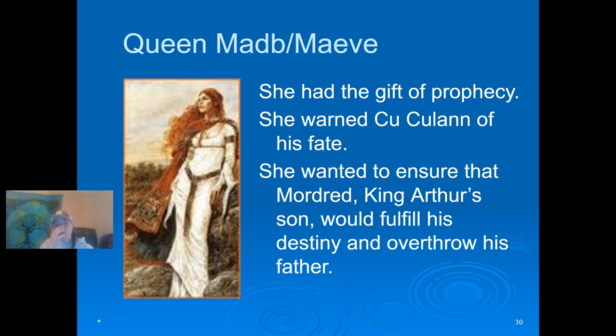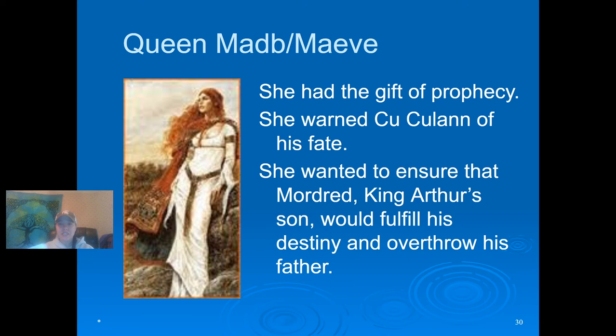Queen Maeve — you might remember Queen Maeve from the Celtic culture story The Cattle Raid of Cooley. She's the jealous wife who wants everything her husband has. He had a white bull, so she wanted a bull too and ends up going through all these battles and cattle raids to achieve the brown bull, who then fights the white bull and they end up killing each other. If you remember Queen Maeve, she has the gift of prophecy. She was the one who warned Cú Chulainn of his fate. She wanted to ensure that Mordred, King Arthur's son, would fulfill his destiny and overthrow his father — so she was not necessarily a good character in the King Arthur legends.